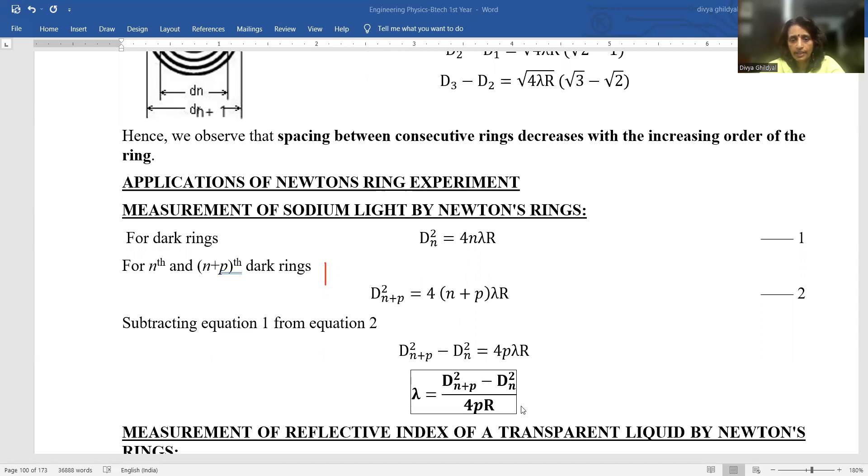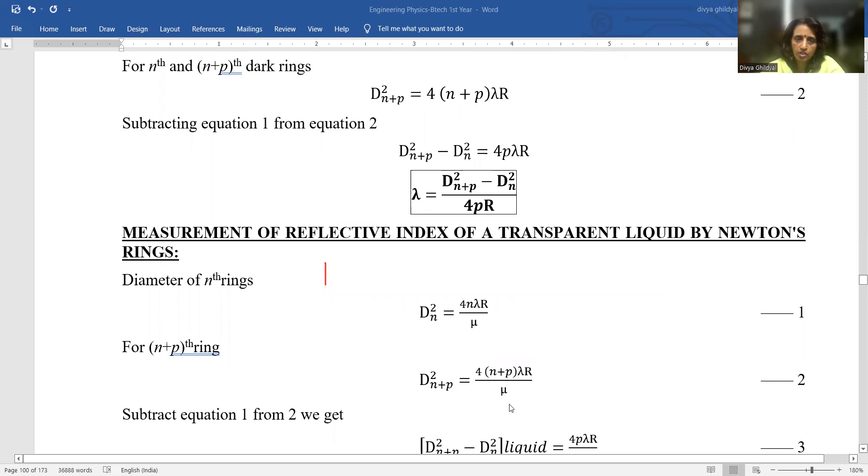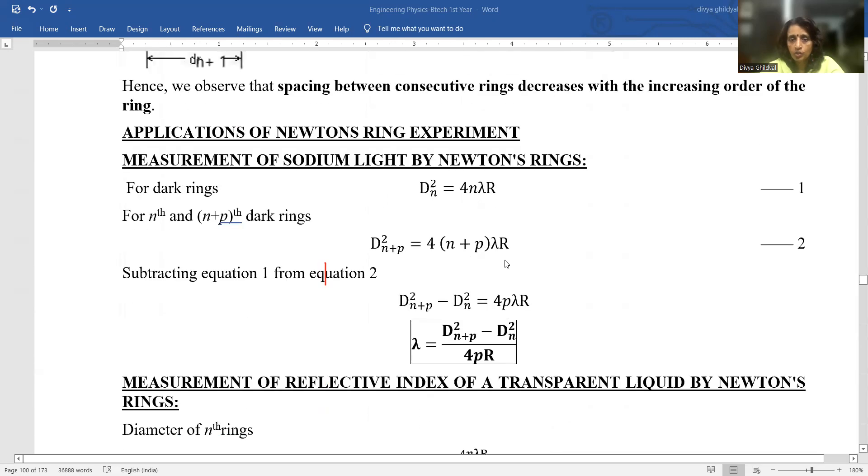Second, you are using this formula λ = (D²N+P - D²N)/4PR and another application you can take is measuring the refractive index of any liquid by Newton ring experiment.